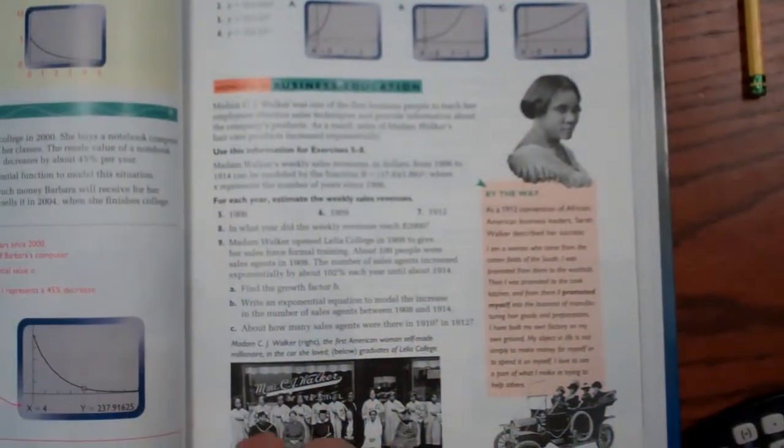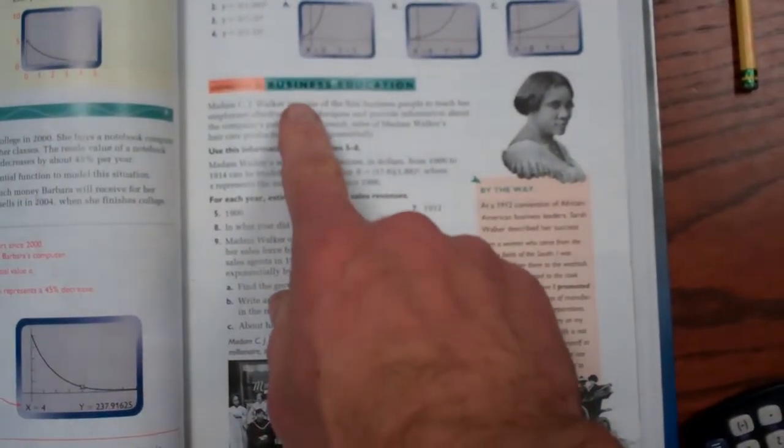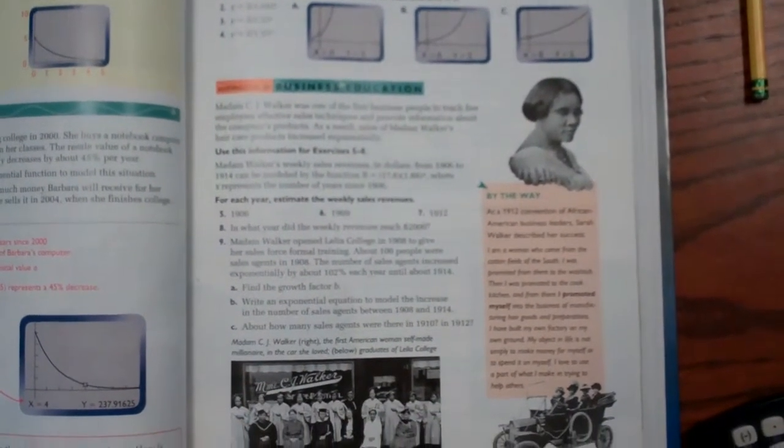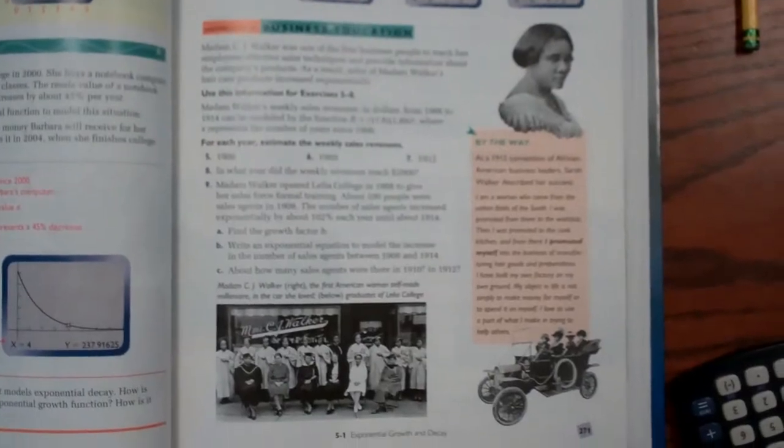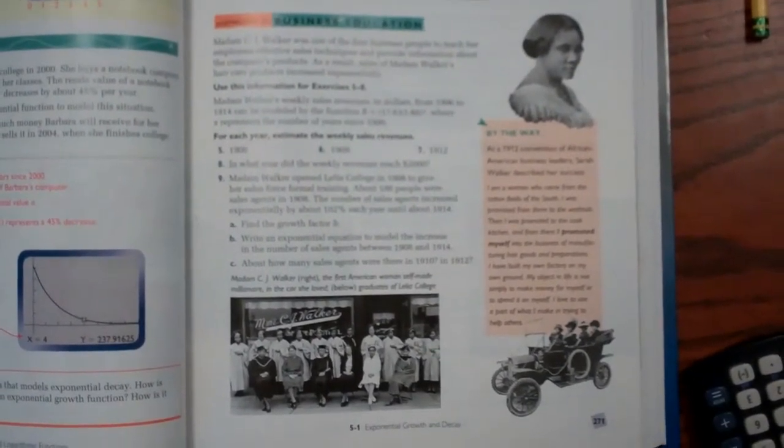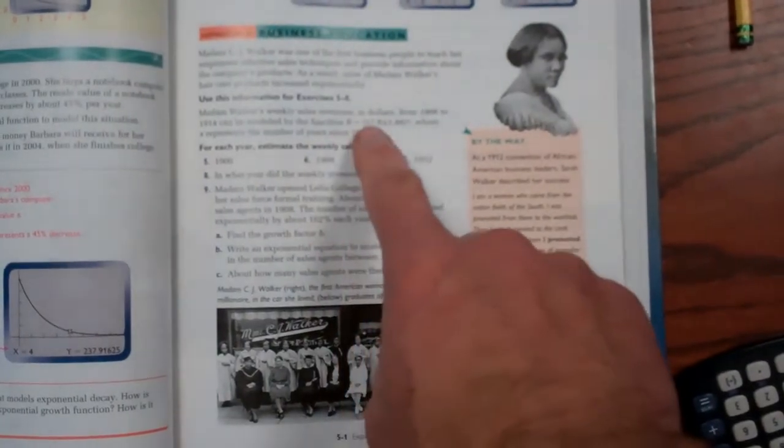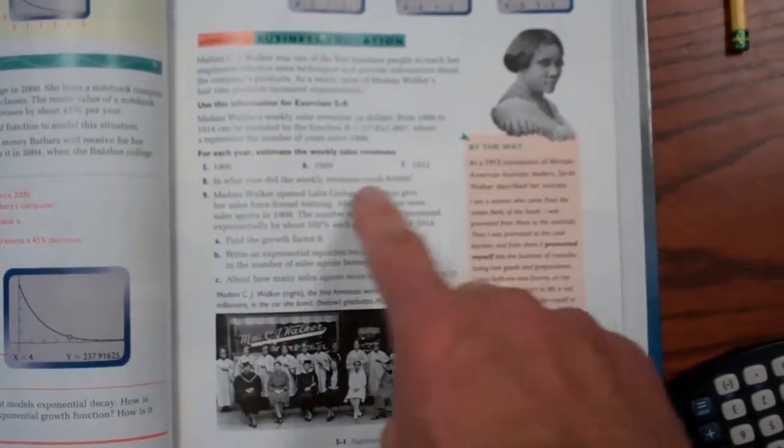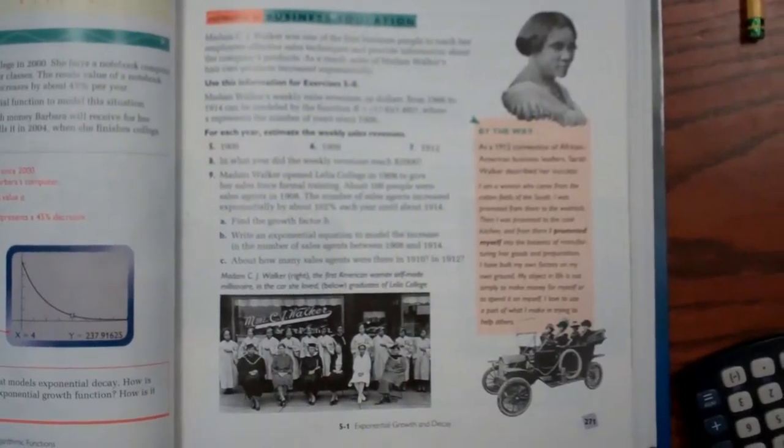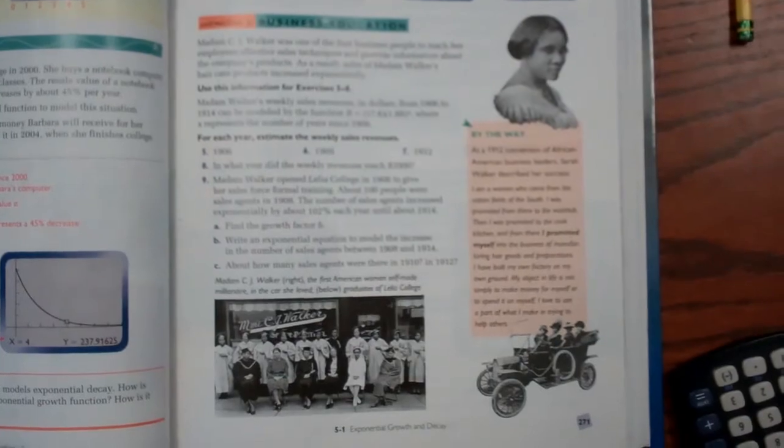If you would simply read through this problem, it's about Madam C.J. Walker and her hair care products and how they grew exponentially, became very profitable, and you can follow the equation here that's given, and answer 5, 6, 7, 8, and 9. So try to do those and bring them in on the next day we have class.